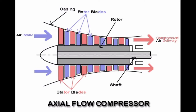Hello, my friends. Today I want to describe the aircraft axial flow compressor. In this type of compressor, the airflow is linear and parallel to the axis, and for this reason this type of compressor is called axial flow and has so many advantages, so it is used in modern engines.